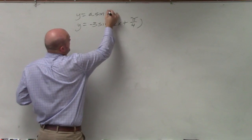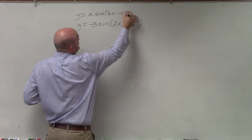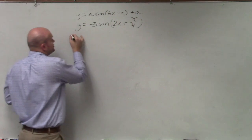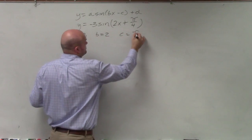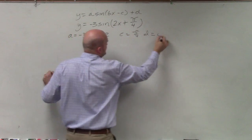So you could say a is equal to negative 3, b is equal to 2, c is equal to π over 4, d is equal to 0.